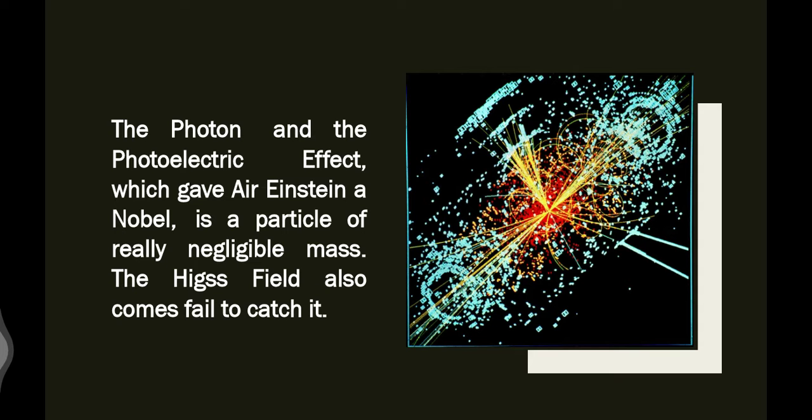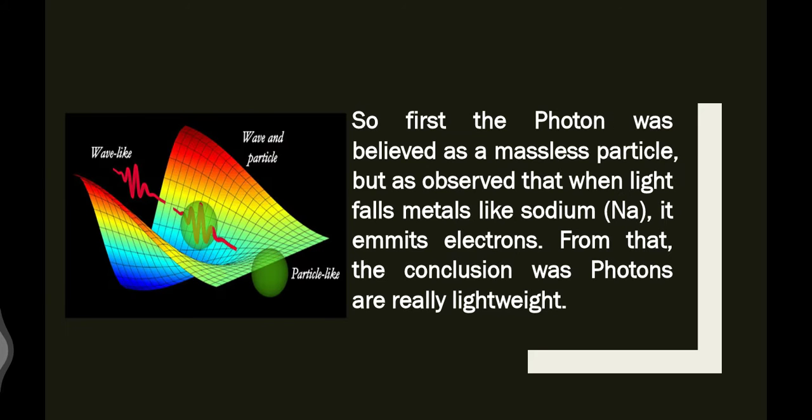So first, the photon was believed as a massless particle. But as observed, when light falls on metals like sodium, it emits electrons. From that, the conclusion was photons are really lightweight. Why this conclusion from this type of experiment? Because in a metal plate, if you put light and you see electrons are coming out, then something is responsible to accelerate the electron. Anything with mass zero can't accelerate any kind of bodies or things.